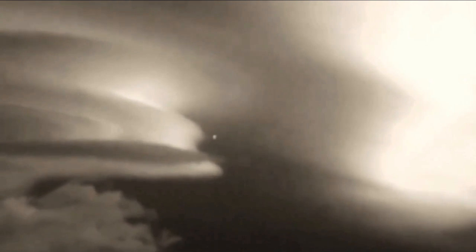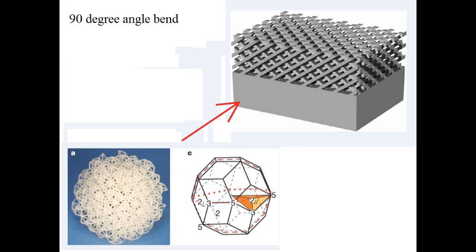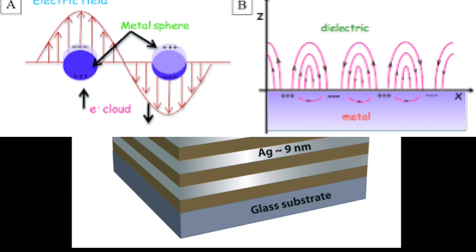Well, yeah, a metamaterial is an artificial material that's constructed as a lattice of certain kinds of regularly shaped objects. It has very interesting properties. It was first done, I think, in the field of microwave engineering.